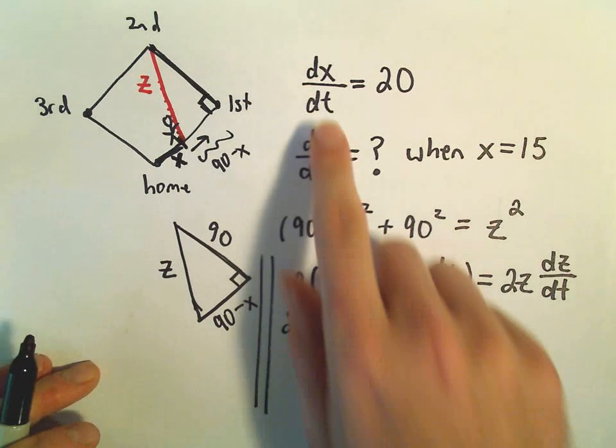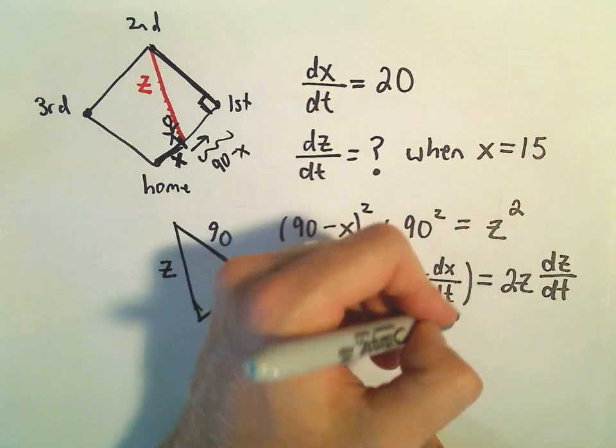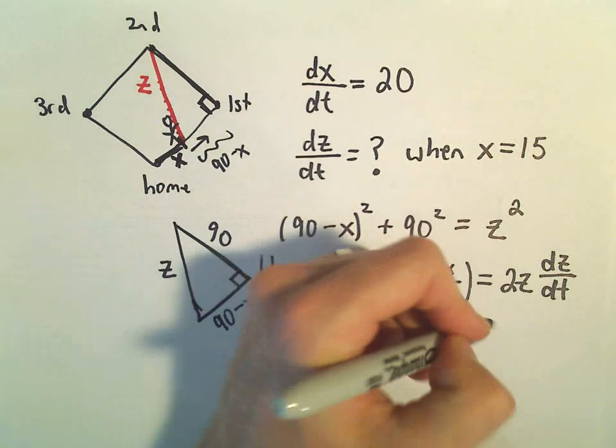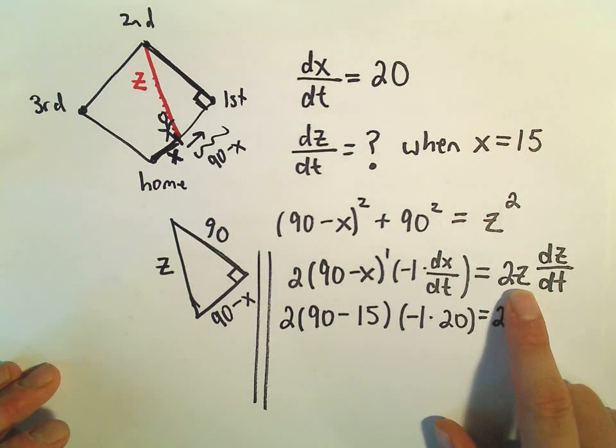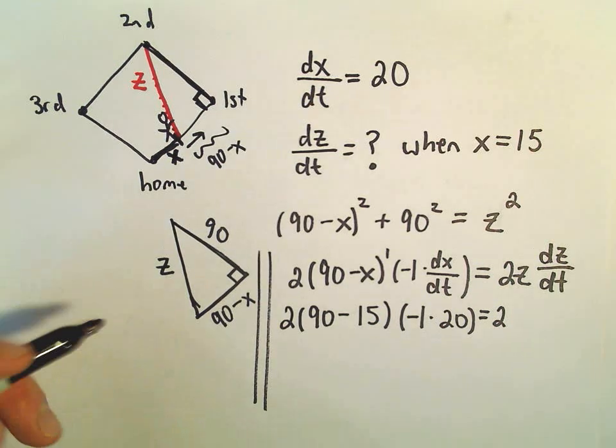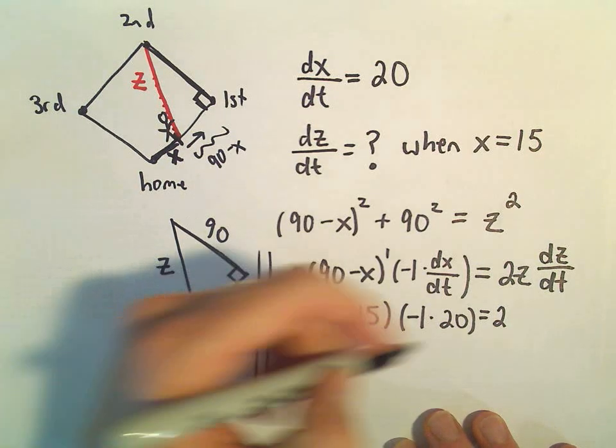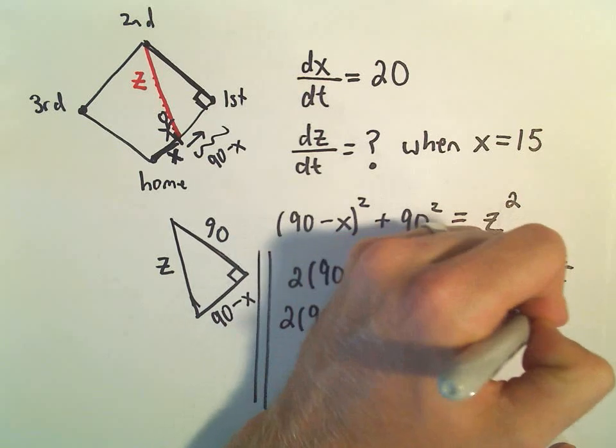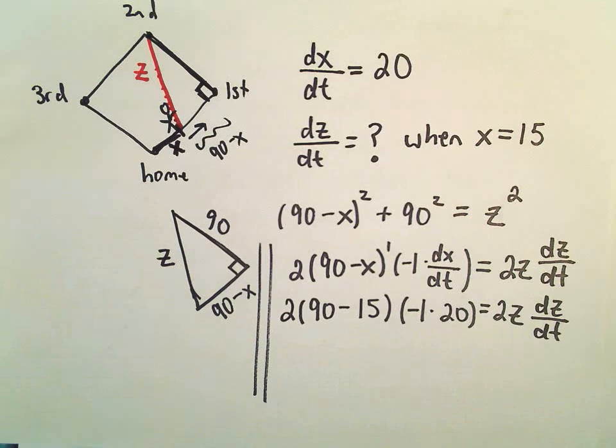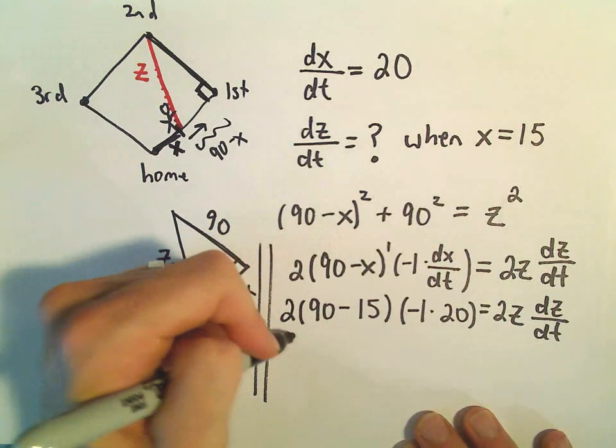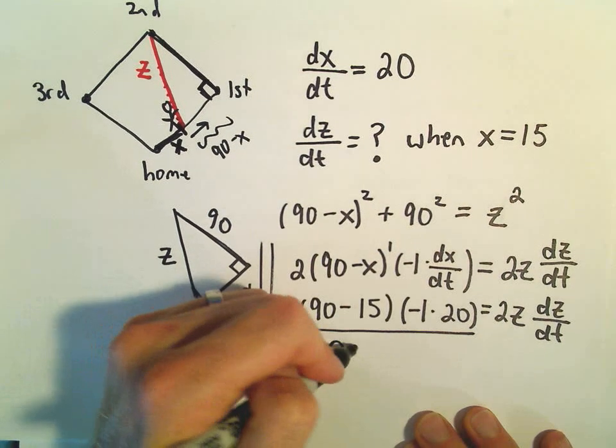And then we have 2, okay, now I need a value to plug in here for z. But at first glance, we don't have anything for z. So we can figure that out, though. So we've almost got everything we need. Notice we could divide both sides simply by 2z. And that would give us dz/dt equals this expression here on the left.